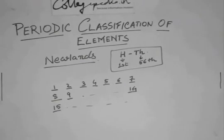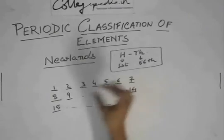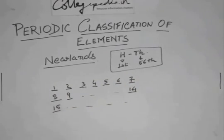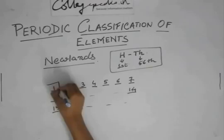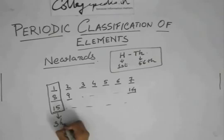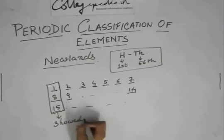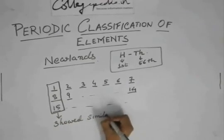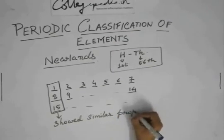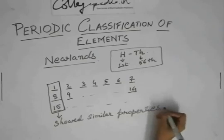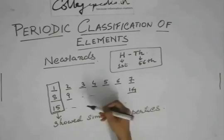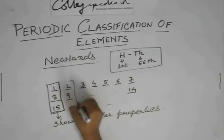He basically repeated the cycle after every 7 elements. What he found was that elements 1, 8, and 15 showed similar properties. Similarly, 2, 9, 16 and 3, 10, 17 — all these also showed similar properties.